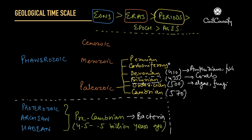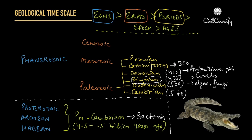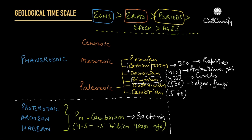The Carboniferous period started roughly about 360 million years ago, and Carboniferous is generally divided into two parts: the upper Carboniferous period, also called Mississippian, and the lower Carboniferous period, also called Pennsylvanian. The Carboniferous period is very important because reptiles emerged at this point. So you must remember the Carboniferous, Devonian and Silurian periods, because corals, amphibians, fish, reptiles and insects were evolving during this time.